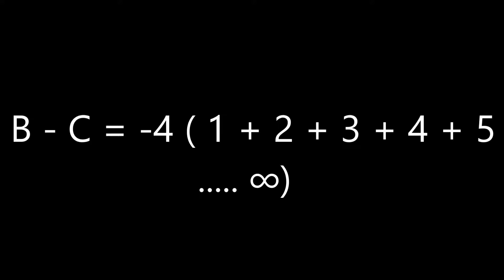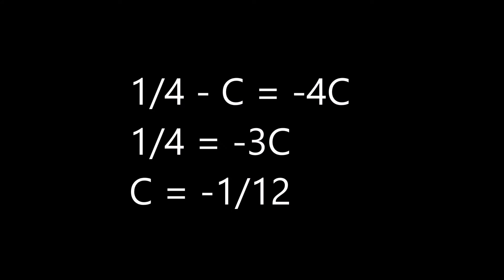Factoring out negative 4 from the right side, we have negative 4 times the quantity 1 plus 2 plus 3 plus 4 plus 5 up to infinity. Since 1 plus 2 plus 3 up to infinity is equal to C, and B is equal to one fourth, we have one fourth minus C is equal to negative 4C. So one fourth equals negative 3C, which yields C equal to negative 1 over 12. Thus, the sequence 1 plus 2 plus 3 plus 4 plus 5 plus 6 plus 7 plus 8 plus 9 plus 10 up to infinity is equal to negative 1 over 12.